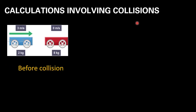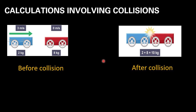Now we are moving to a calculation of momentum. In this picture, before the collision, the blue trolley is moving to the right at 3 m/s with a mass of 2 kg. The red trolley is stationary — velocity is 0 m/s — with a mass of 8 kg. After the collision, both trolleys are attached together and moving as one unit, with a final mass of 10 kg. We have to find the final velocity, using the principle of conservation of momentum.